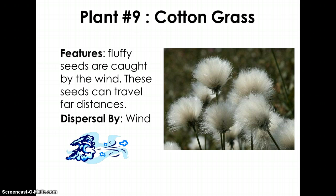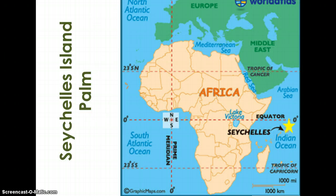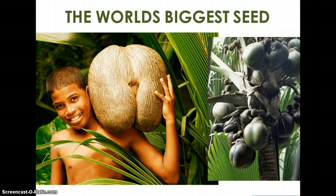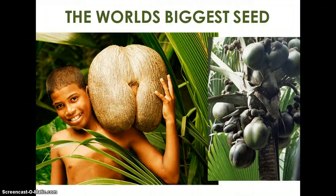Great job on that exercise — please make sure you have the correct answers and go back if you need to check any of them. Now, I want to talk about a place called Seychelles Island, marked off the east coast of Africa. Growing there is a palm tree that holds the distinction of creating the world's biggest seed. Any ideas what kind of dispersal would be used for this big seed? Water would be the method of dispersal for this kind of seed.